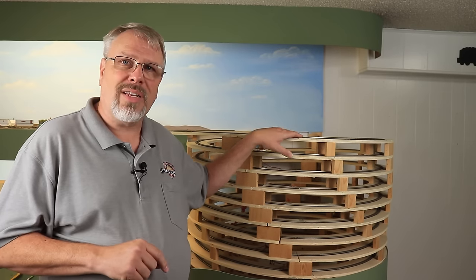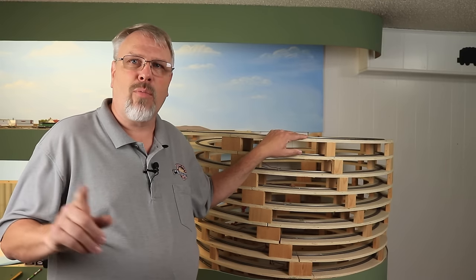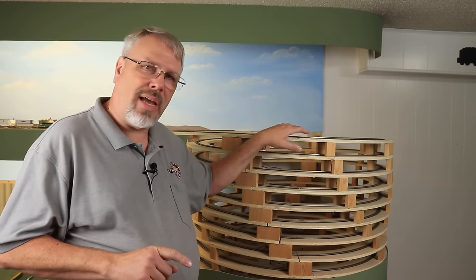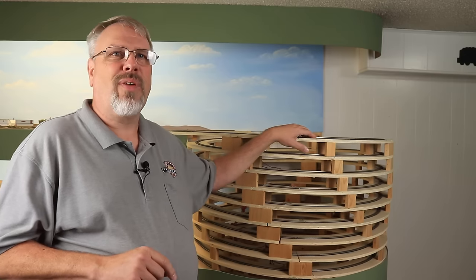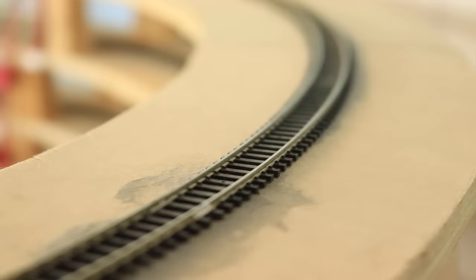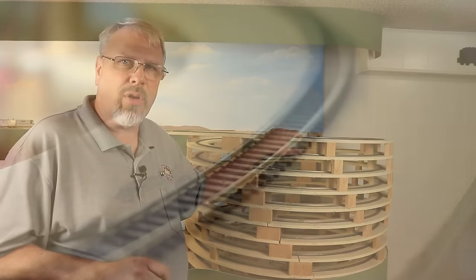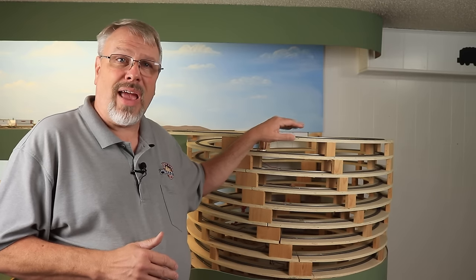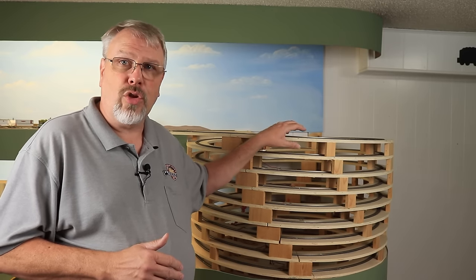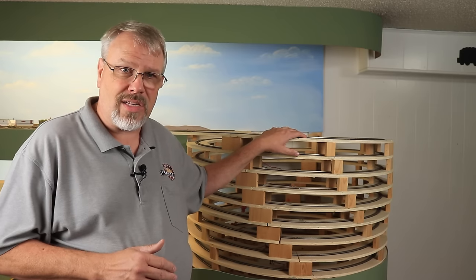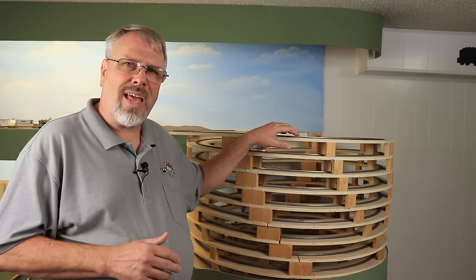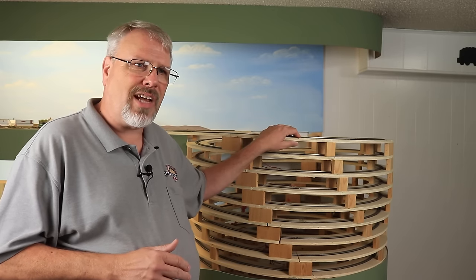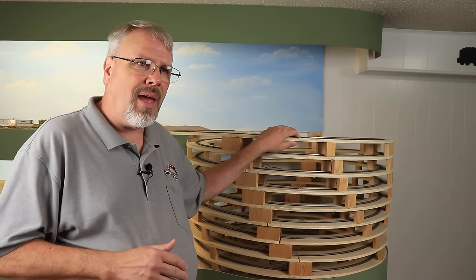I glued it down exactly the same way I do on the layout, which means that I used a latex caulk, and I used a very thin layer. On the layout, I want to use a real thin layer. I don't want it to come up between the ties. I want it to be easy to ballast over. In the Helix, I'm not ballasting, so I don't have the extra support of the ballast and the glue on the ballast to hold the track in place. I also don't have to worry about how the ballast looks. What that meant was that thin layer of latex caulk in one place in particular turned loose. It didn't hold the track well.